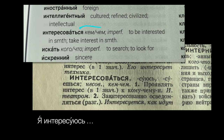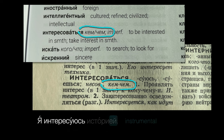So, when we see КЕМ, ЧЕМ — the instrumental case forms of КТО and ЧТО — for example, this tells us to use the instrumental case with Интересоваться. Я интересуюсь историей.